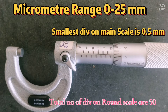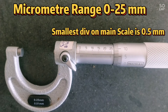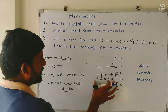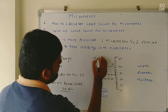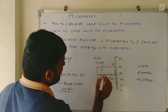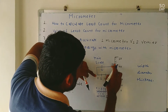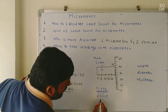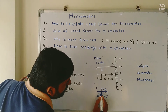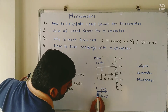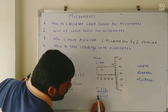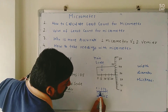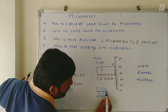The value of one division of the main scale is 0.5 mm, and total divisions on the round scale are 50. So this is the main scale — 0, 5, 10, 15, 20, and 25. In between 0 to 5 there are 5 big divisions: 1, 2, 3, 4, 5 mm. In between 0 and 1 there is one division mark whose value is 0.5, which increases as 0.5, 1.5, 2.5, 3.5, 4.5, and 5.